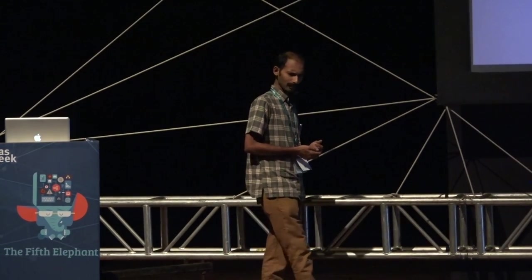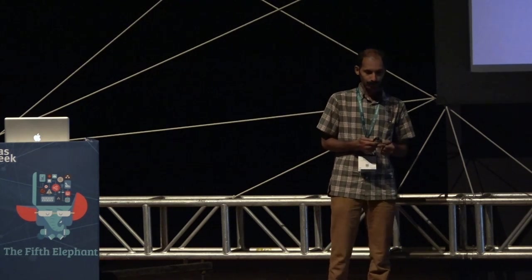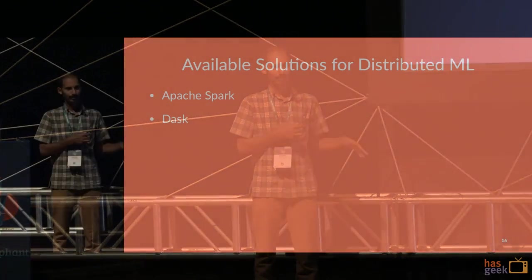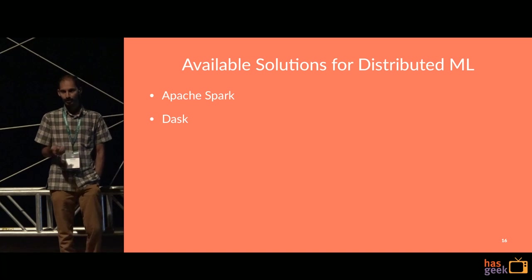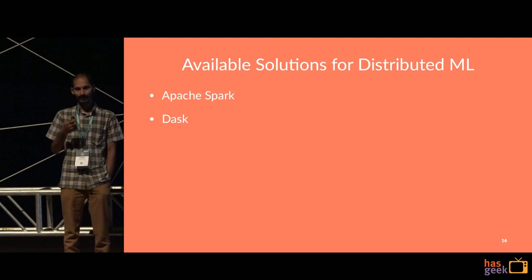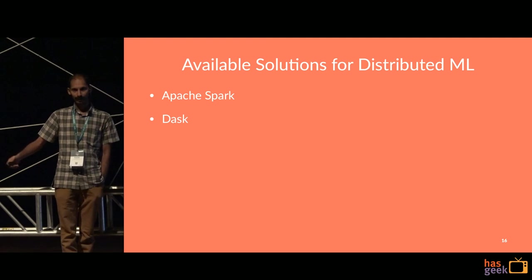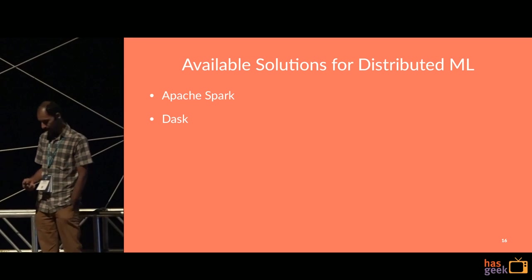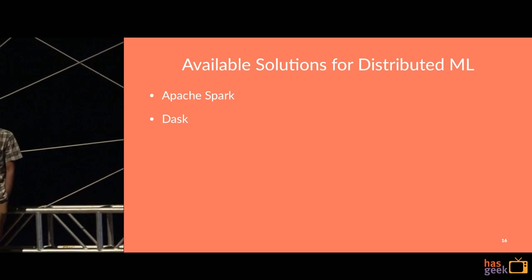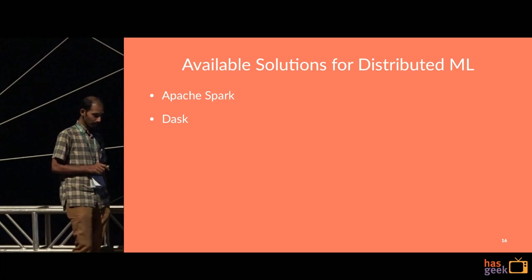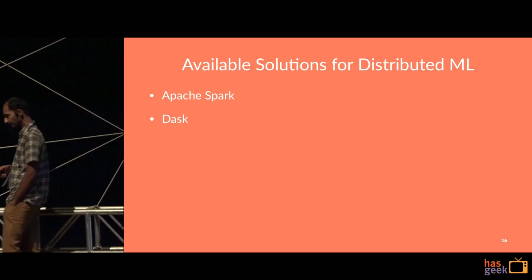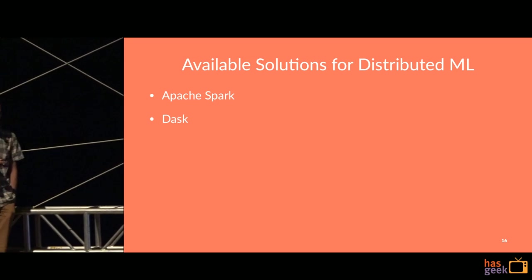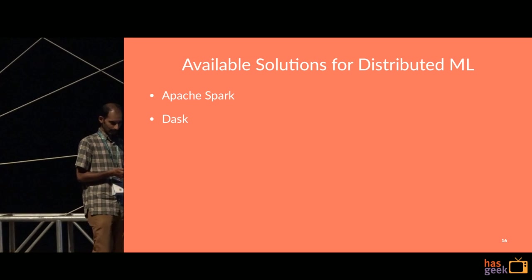There are already available solutions. Apache Spark is a very good tool for doing distributed ML, but the problem is you can't use your existing tools — you can't use scikit-learn, for example. You have to use Spark's own libraries. If you're already experienced with scikit-learn, you can't translate that directly to Spark; you'd start learning everything again. There's another library called Dask, which is a very interesting and flexible compute library that supports multiple backends — threaded, process-based, or distributed backends.